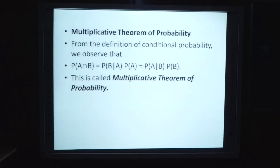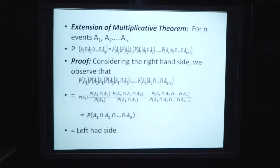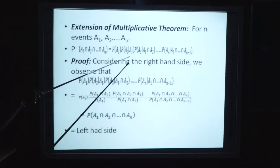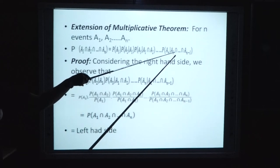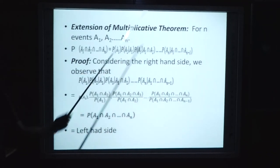Multiplicative theorem of probability - jis tarike se hum logon ne isse pehle ki unit mein additive theorem of probability padhi thi, thik usi tarike se yahan par multiplicative theorem of probability. From the definition of conditional probability, we observe that P(A ∩ B) = P(B|A) × P(A) = P(A|B) × P(B). This is called multiplicative theorem of probability. For n events A1, A2 up to An: P(A1 ∩ A2 ∩ ... ∩ An) = P(A1) · P(A2|A1) · P(A3|A1 ∩ A2) · ... · P(An|A1 ∩ A2 ∩ ... ∩ A(n-1)).